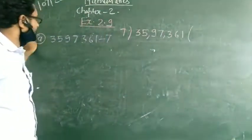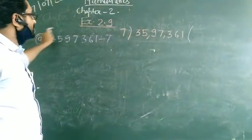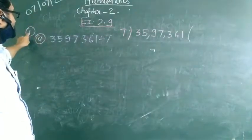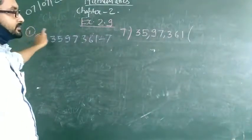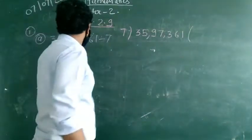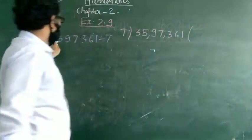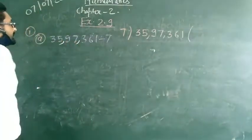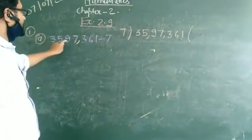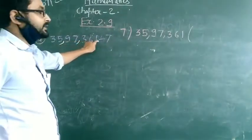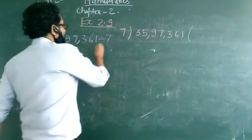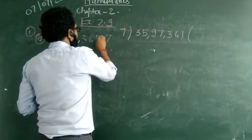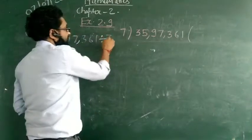So, in exercise 2.9, motion number 1, the sum is: we have 25,997,361, and we have to divide it by 7.